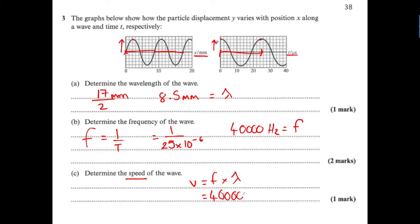The wavelength is 8.5 mm, so 8.5 × 10⁻³ m. When you put that in your calculator, you get 340 m/s. Does that seem reasonable? Yes, it does, because that is the speed of sound in air.